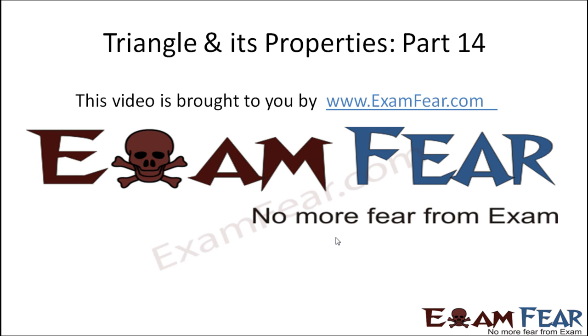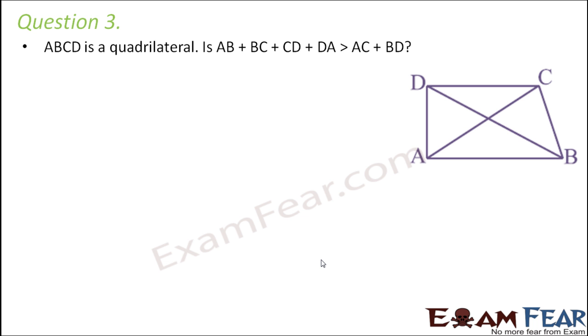Hello friends, this video on triangle and its properties part 14 is brought to you by examfear.com. Question number 3: ABCD is a quadrilateral. What is a quadrilateral? Quadri means four, so any polygon with four sides is called a quadrilateral. Is AB plus BC plus CD plus DA greater than AC plus BD, where AC and BD are the diagonals of the quadrilateral?